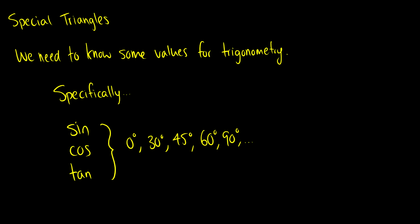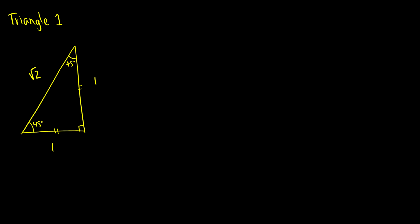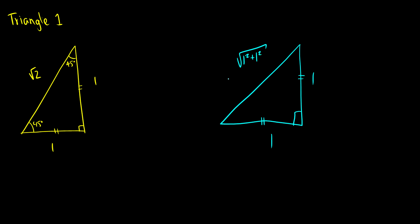Let's talk about the first special triangle — the 45-degree triangle. We construct it by taking a triangle with two equal edges of length 1 and 1, making it an isosceles right triangle with 90 degrees between those legs. We then find the hypotenuse using the Pythagorean theorem: √(1² + 1²) = √2. And by the nature of being isosceles, the two remaining angles are each 45 degrees.